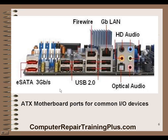Some of the ports on our computer: we have external SATA for external hard drives, USB ports at 3 gigabits per second — that's been moved up to 6 gigabits per second. We have quite a few USB 2 ports; USB is now at 3.0, which is considerably faster. It might also have a FireWire port, a gigabit LAN connection, audio, and possibly an optical audio port. These are the common I/O devices you'll find on motherboard ports.